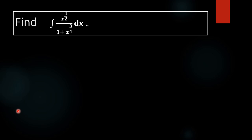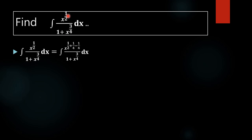We need to get x raised to 3/4 in the numerator. Here we have x raised to 1/2, so in order to get x raised to 3/4, we have to add 1/4 to the power of x. To balance that, we also subtract 1/4 from the power of the numerator.